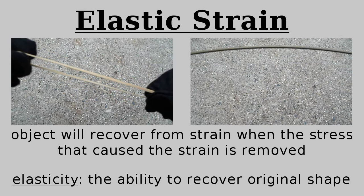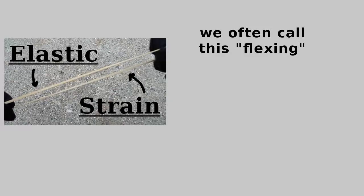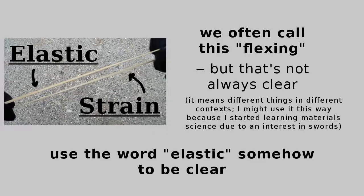Something that is elastic will recover from strain when the stress that caused that strain is removed. An object's elasticity, therefore, is its ability to return to its original shape. Elastic strain occurs in all materials because the distance between bonded atoms isn't strictly fixed, so applying stress causes atoms to get slightly closer or further. We tend to refer to the full-scale effect as flexing, but if there is a possibility of confusion, then it's better to ensure that the word elastic is being used somehow.